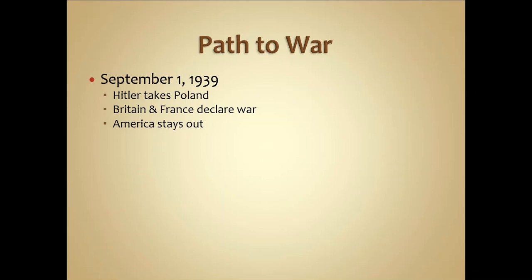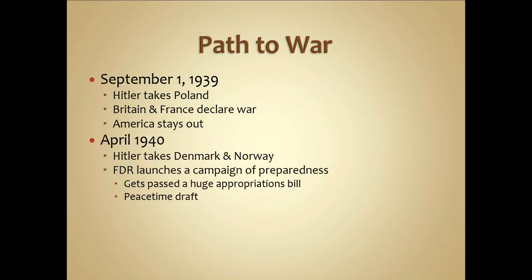The German army then began to advance on France, which started arming its troops and border as quickly as possible. The time frame from September 1939 to April 1940 was known as the phony war, because French and British troops were positioned on the Maginot Line — a very sophisticated system of fortification that France had built after World War One because they simply didn't trust Germany. Having been invaded twice, they feared Germany would invade again.